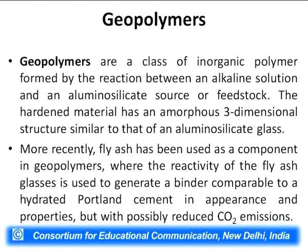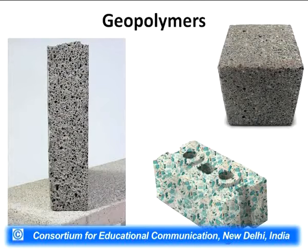Fly ash can also be significantly utilized for the production of geopolymers. Geopolymers are a class of inorganic polymers formed by the reaction between an alkaline solution and an alumino-silicate source. The hardened material has an amorphous three-dimensional structure similar to that of an alumino-silicate, and that is why fly ash is highly utilized for the production of geopolymers. More recently, fly ash has been used as a component in geopolymers where the reactivity of fly ash glasses is used to generate a binder comparable to hydrated Portland cement in appearance and properties, but with possibly reduced CO₂ emissions. These are pictures of some of the geopolymers.